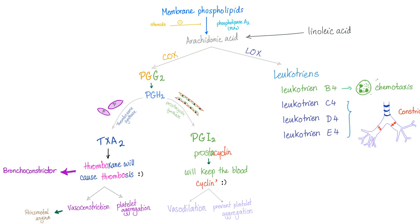Quick review of the arachidonic acid pathway via cyclooxygenase: we have prostaglandins depending on the tissue. Thromboxane A2 is produced by platelets and promotes coagulation, while prostaglandin I2 is produced by the endothelium and inhibits coagulation.